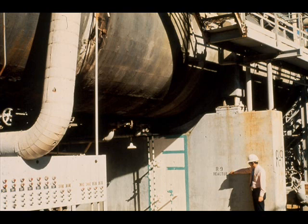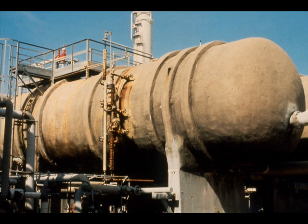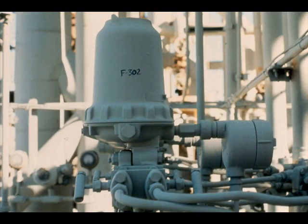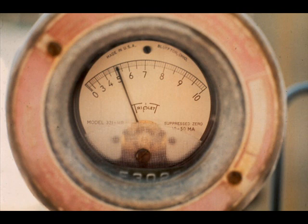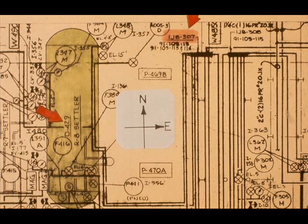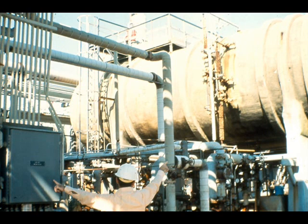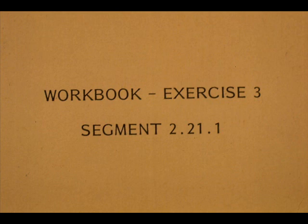This is R9. Here is D430. The field items are between R9 and D430. Here are the field items: the transmitter, the I2P, and the field indicator. Find the IJB. Also, find a major process item for a location reference. We are facing south, so IJB307 is to the left of D429. Now work exercise number three in your workbook.